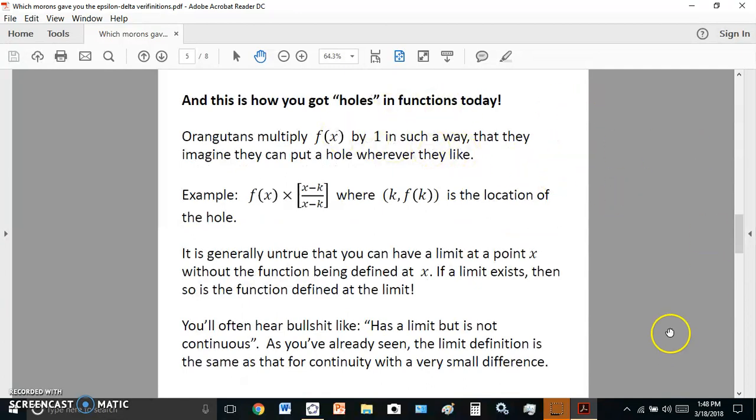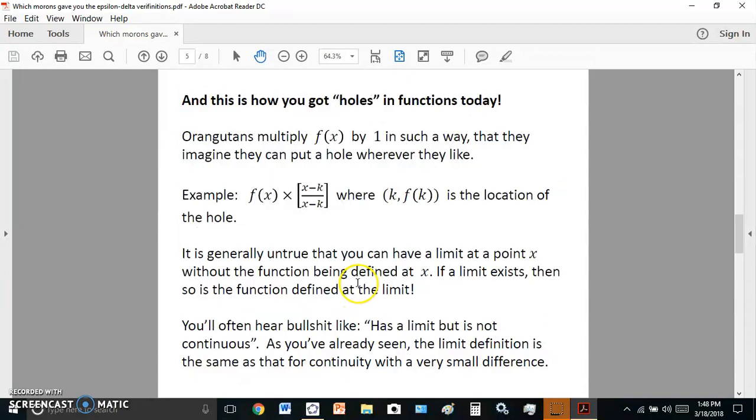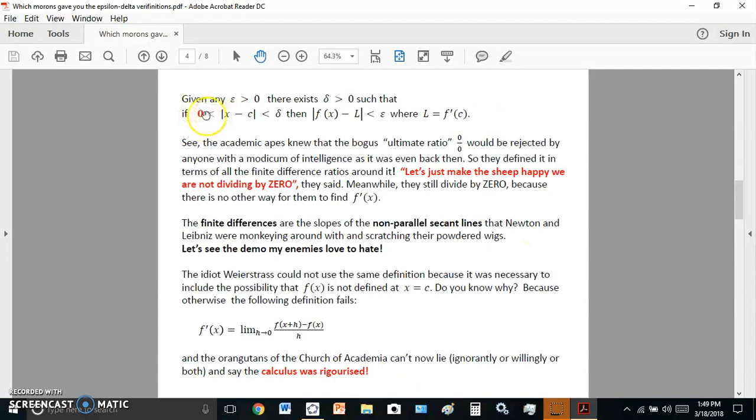And how did you get holes in today's function? Do you know? Well, remember, you need this hole here at the limit. So you need the hole, otherwise this definition will fail, okay? So how do you get a hole? Well, it's very easy. You multiply by one. See, over here, you have f(x) multiplied by (x - k)/(x - k), which is total crap. And k and f(k) is the location of the hole. It is generally untrue that you can have a limit at a point x without the function being defined at x. It's completely false. If a limit exists, then so is the function defined at the limit. You'll often hear bullshit like it has a limit, but it's not continuous. As you've already seen in the previous slides, the limit definition is the same as that for continuity, with a very small difference greater than zero, okay?